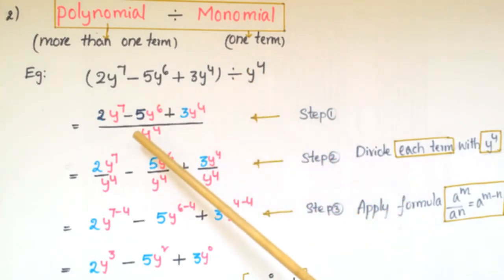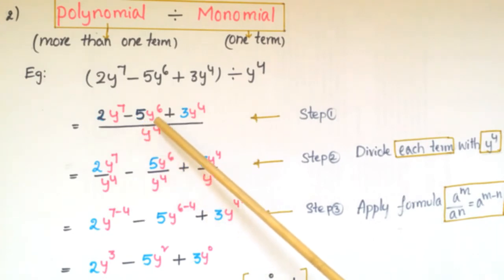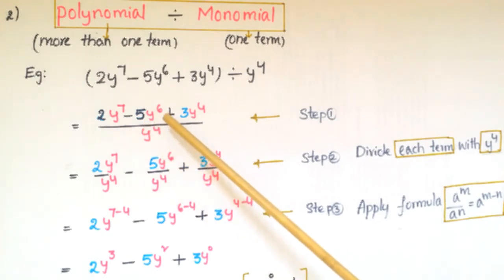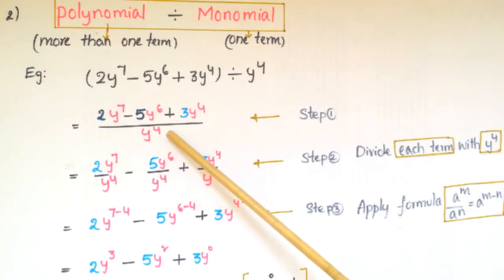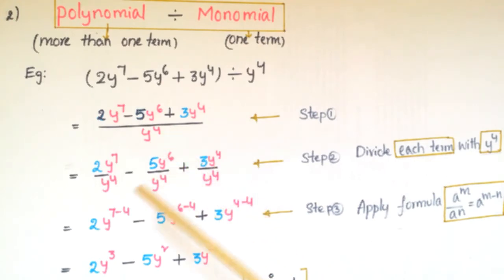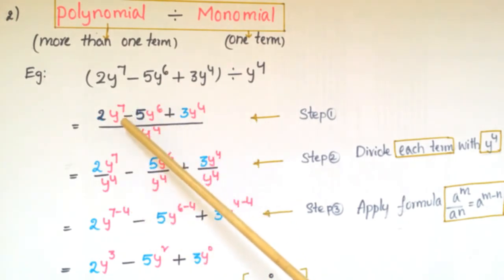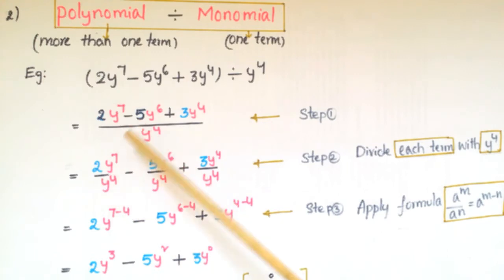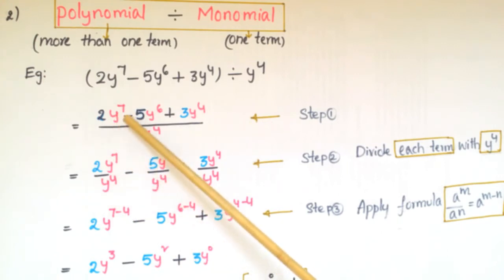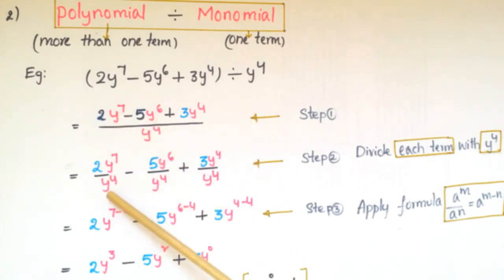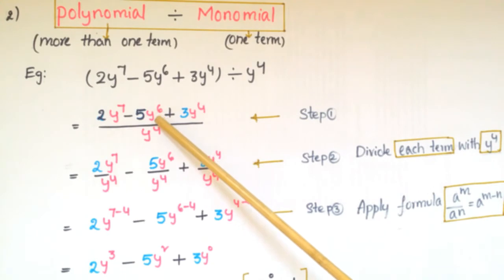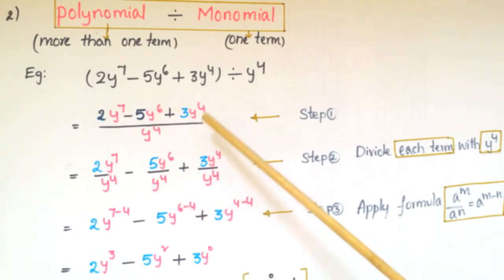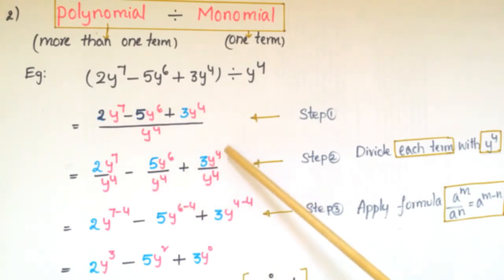The divisor y⁴ has only one term, so it is a monomial. We write the expression as (2y⁷ − 5y⁶ + 3y⁴) / y⁴, and in the second step we separate all the terms: 2y⁷/y⁴ minus 5y⁶/y⁴ plus 3y⁴/y⁴.